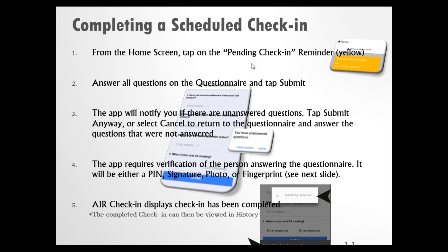The app will notify you if there are unanswered questions — a box will pop up. Tap Submit Anyway if that's what you meant, or select Cancel to return to the questionnaire and answer the remaining questions. Your supervisor will require verification that you're the person filling out the questionnaire. Once you complete your verification method, tap Submit, and you'll see on the bottom bar that the check-in has been completed.